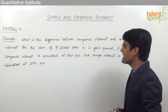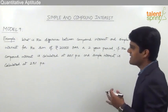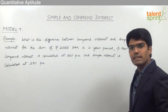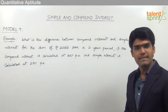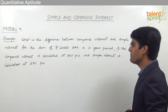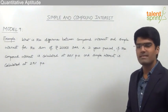What is the difference between compound interest and simple interest for the sum of rupees 20,000 over a two-year period if the compound interest is calculated at 20 percent per annum and the simple interest is calculated at 23 percent per annum?